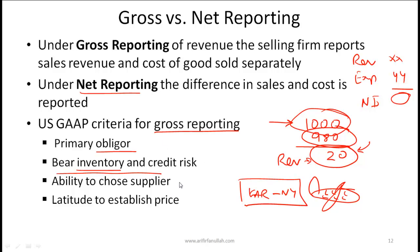Since these conditions don't hold for a travel agent, it cannot do gross reporting and must report only 20 as revenue. If travel agents were to do gross reporting and report 1,000 as revenue, their reported revenue would exceed that of large airlines, which would clearly not make sense. An important point: these criteria operate as an OR condition — if any one of them does not hold, the entity cannot use gross reporting.